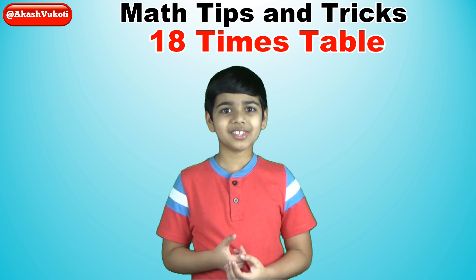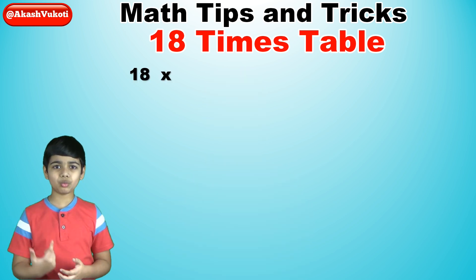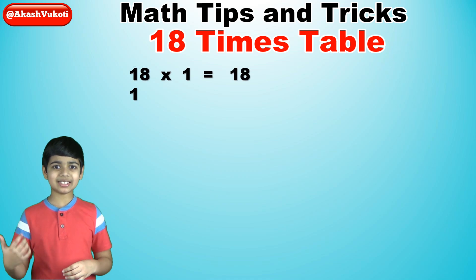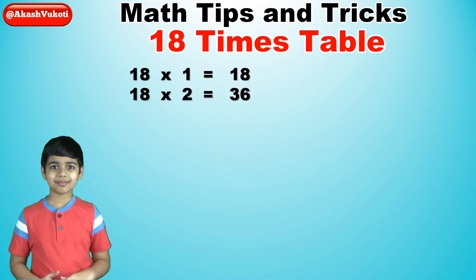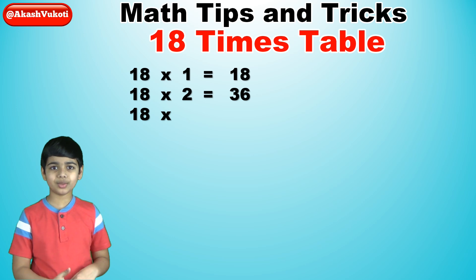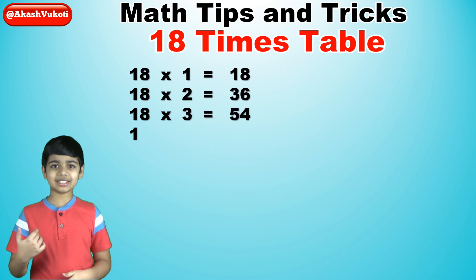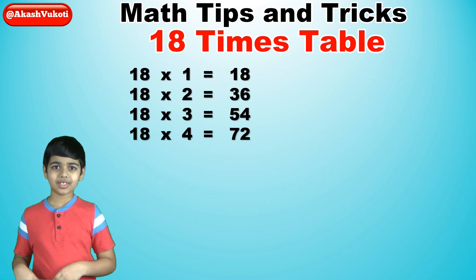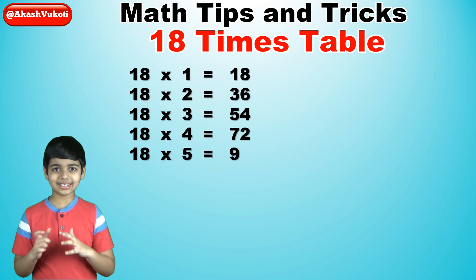Let's go. 18 times 1 is 18. 18 times 2 is 36. 18 times 3 is 54. 18 times 4 is 72. 18 times 5 is 90.